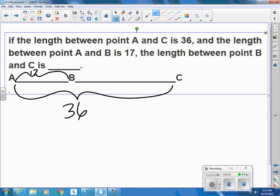The length between B and C is what? So that's the one we don't know. Well, we can say it's 36 minus 17. And 16 take away 7 is 9, so 36 take away 17 is 19.